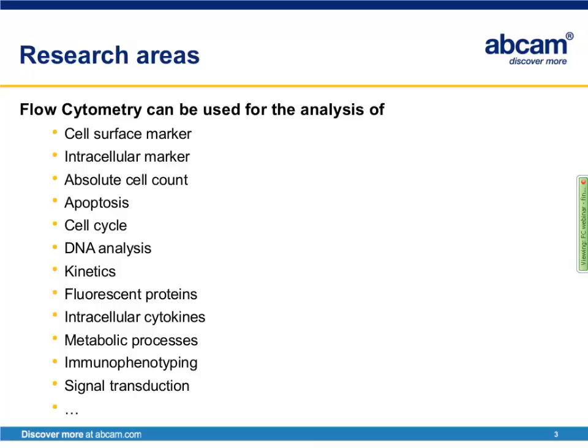Due to its versatility, flow cytometry is widely used in basic and clinical research. Research areas include the investigation of cell surface markers, intracellular markers, fluorescent proteins, and analysis of DNA content. Flow cytometry evolved from the analysis of blood cells in leukemia patients, and today it is still used to phenotype immune system cells in experimental settings such as vaccination studies. It can also be used to characterize cancer cells from solid tumors and circulating tumor cells.